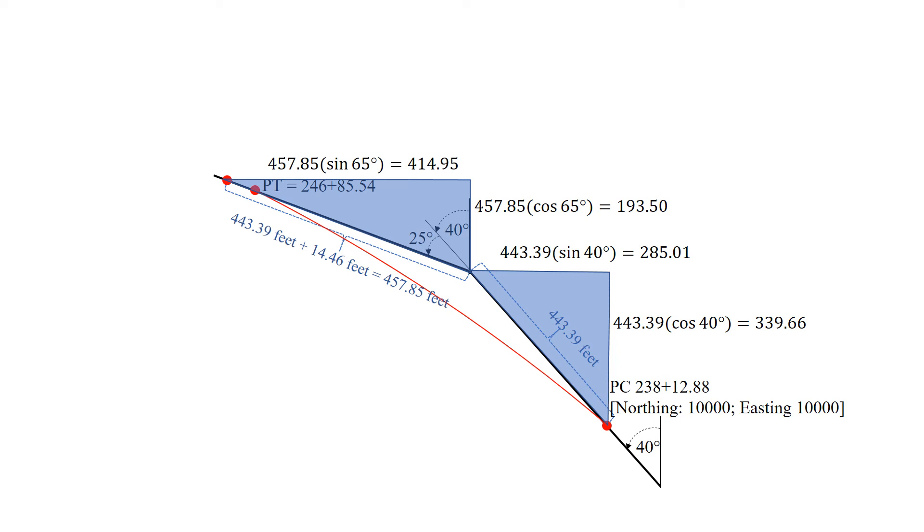Finally, our last horizontal component: 457.85, the length of that hypotenuse again, times the sine of 65 degrees gives us a length of 414.95.